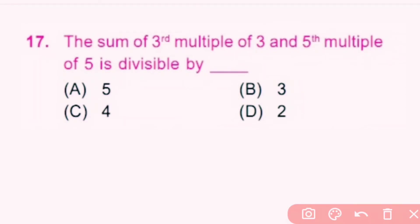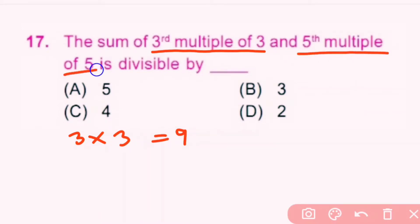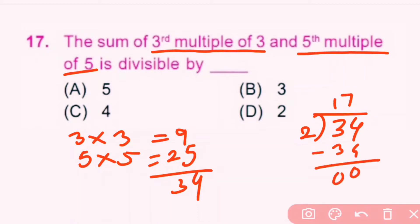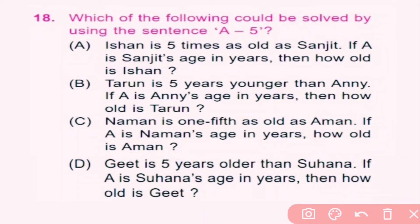Question number 17: The sum of the third multiple of 3 and the fifth multiple of 5 is divisible by what? Third multiple of 3 means 3 × 3 = 9, and fifth multiple of 5 means 5 × 5 = 25. Their sum is 34, which is divisible only by 2. So B is correct.